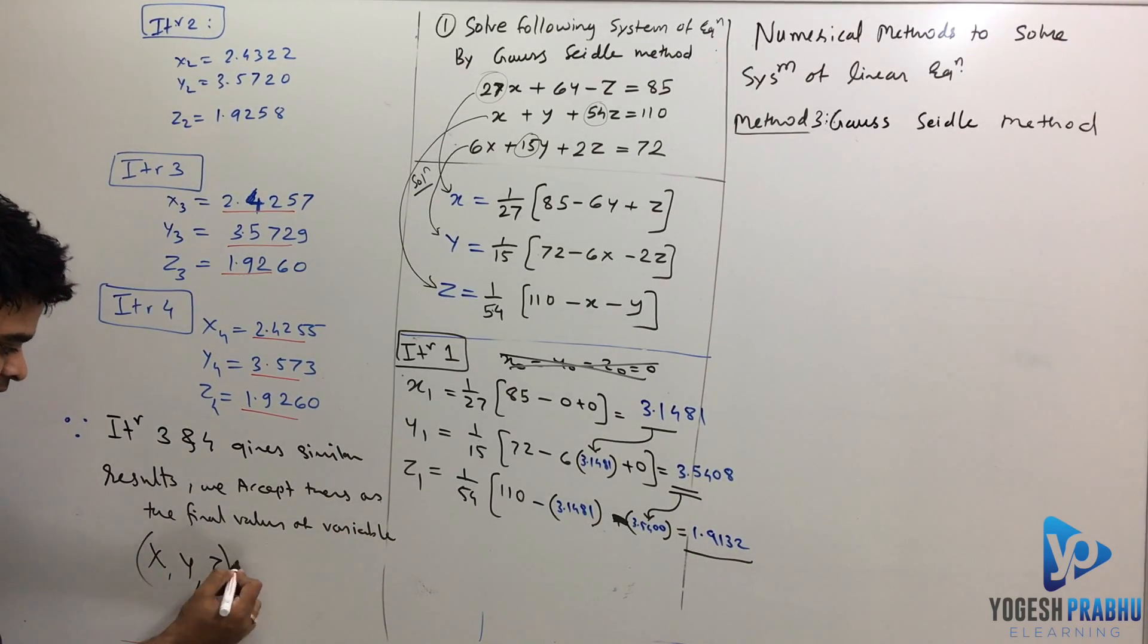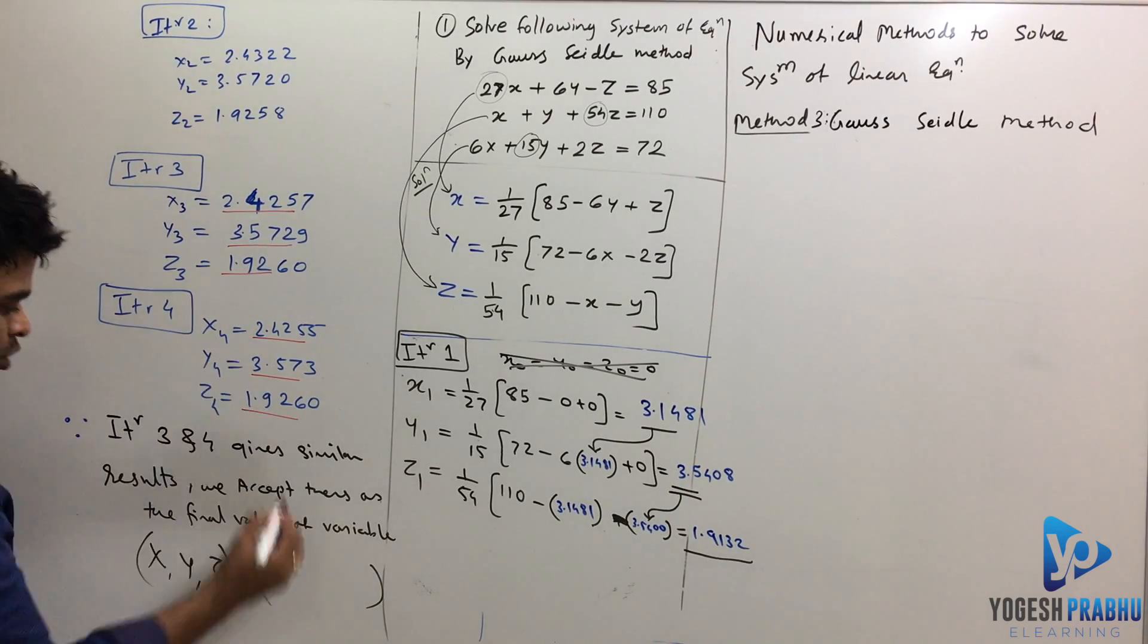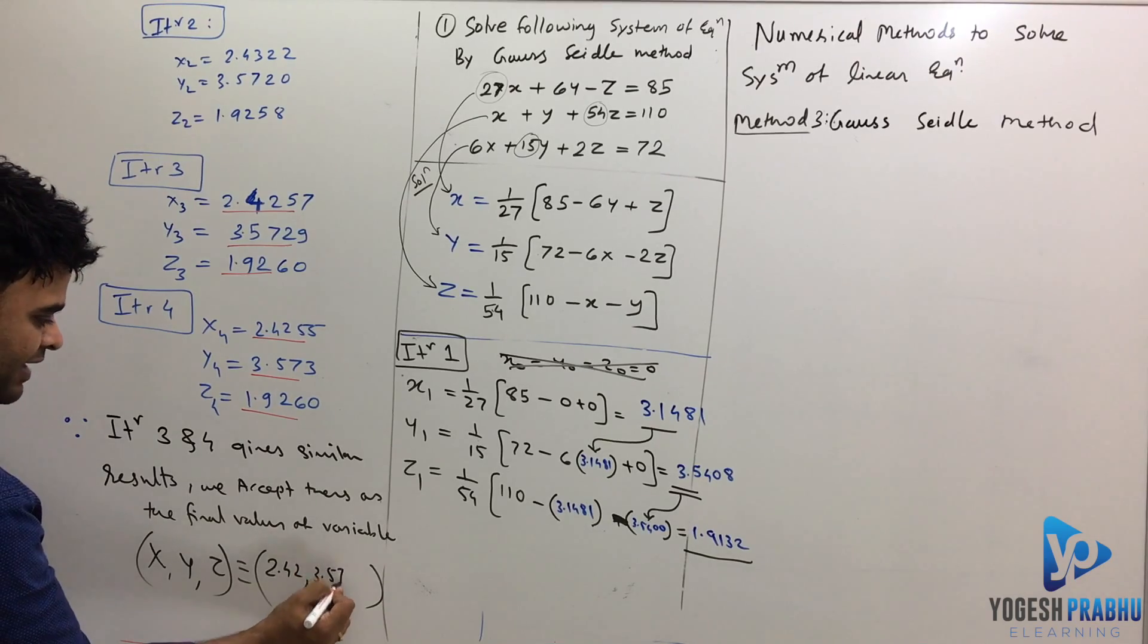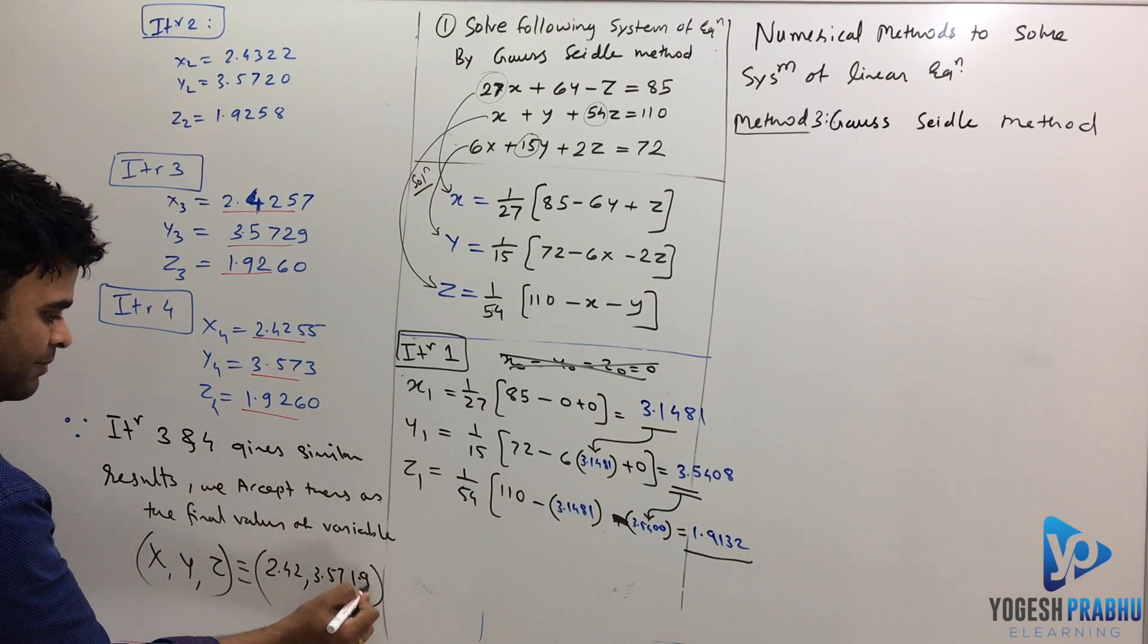And let me write down the final answer. This is x, y and z. Now all these variables will have value. The value of x is going to be 2.42, y is going to be 3.57 and z is going to be 1.92.